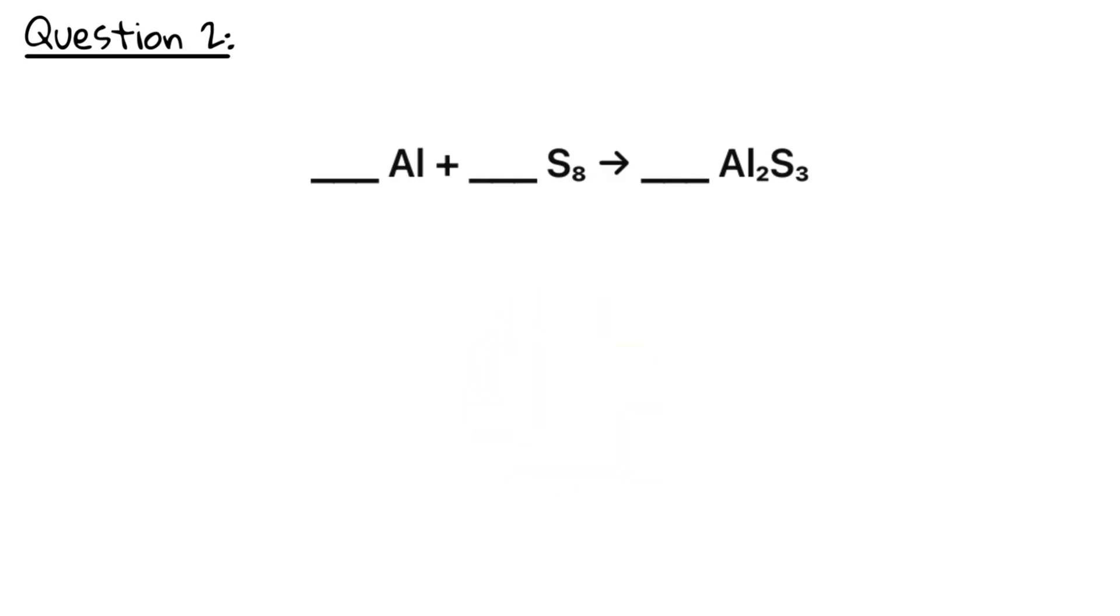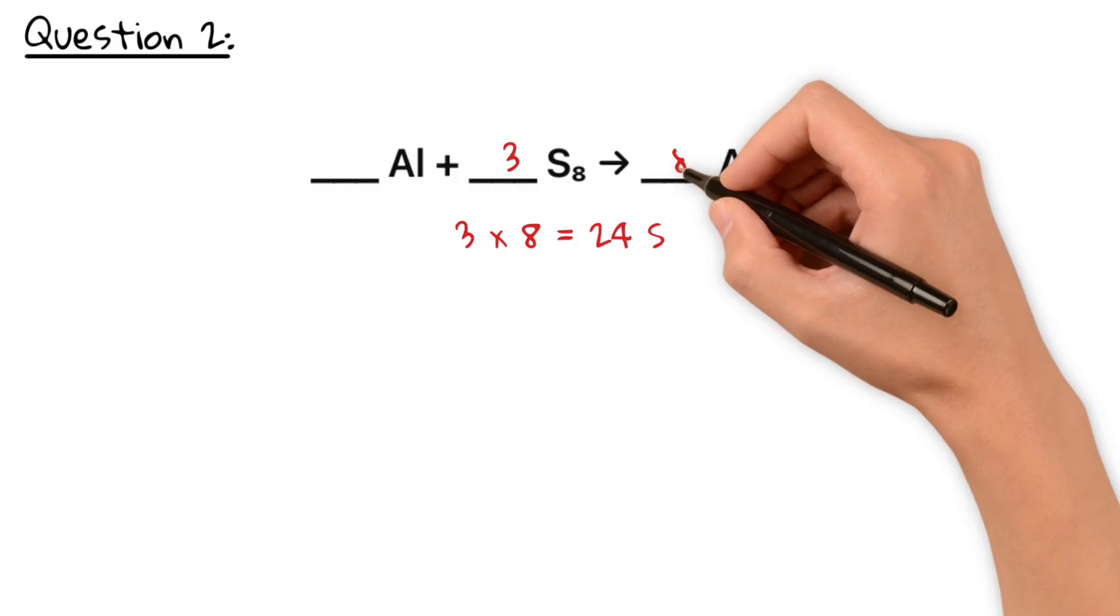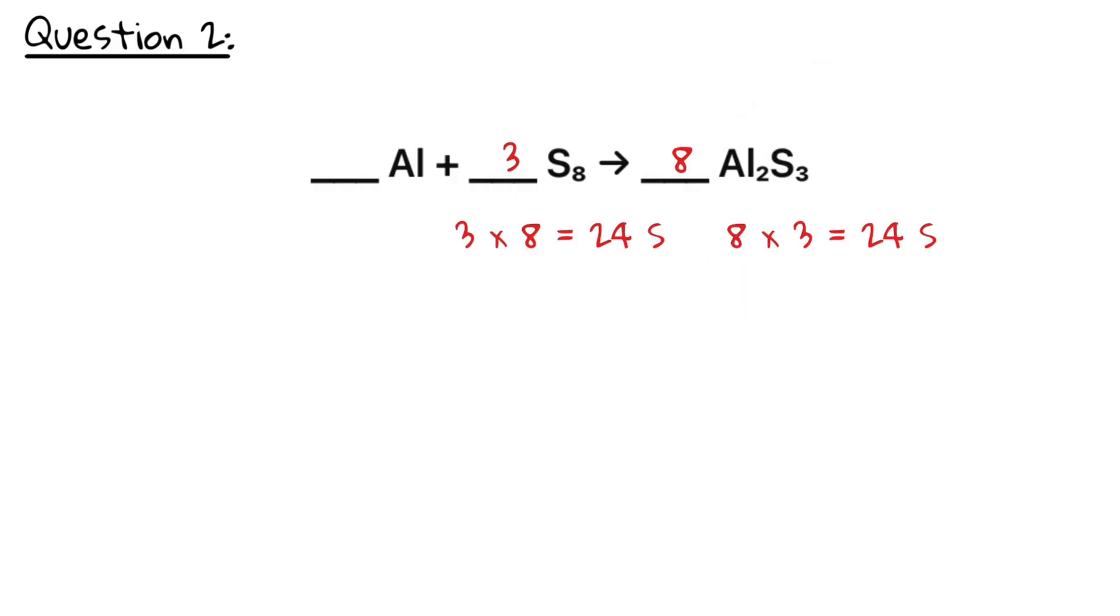Starting with the aluminium here will lead us in circles, so we better start with sulfur. The lowest common multiple of 8 and 3 is 24. So we need 3S8 and 8Al2S3. Now we have 16 aluminium on the right hand side, so we also need 16 aluminium on the left hand side. So the final balanced equation is 16 aluminium plus 3S8 reacts to 8Al2S3.